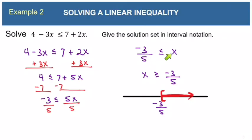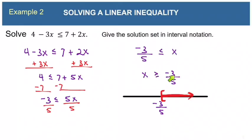This statement says negative 3 fifths is less than or equal to x, meaning it should be less than all the numbers we shade. Notice in our graph, negative 3 fifths is less than all the shaded numbers. It's easier in the rewritten form: where are the numbers greater than or equal to negative 3 fifths? They are to the right.